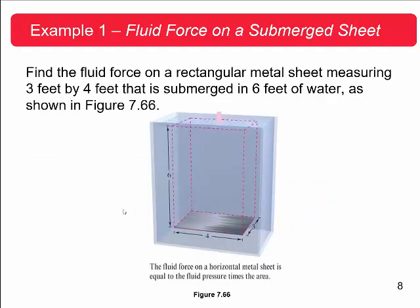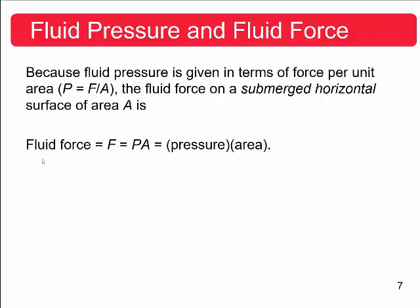All right, let's do an example so you can see this. Find the fluid force on a rectangular metal sheet measuring three feet by four feet that is submerged in six feet of water as shown in this figure. So I'm going to take this metal sheet and I'm pushing it down six feet. So what is the fluid force on the object right now? Well, going back, this is fluid force. Fluid force is pressure times area. So the first thing we need to figure out is what is the pressure.